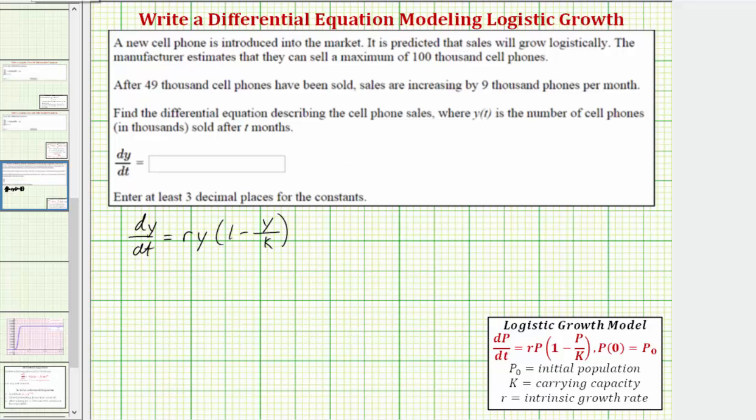Going back to the given information, notice how the maximum number of cell phones sold is estimated to be 100,000 cell phones. Because y of t is the number of cell phones in thousands, this tells us k, the carrying capacity, equals 100.